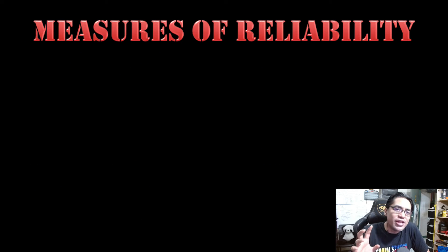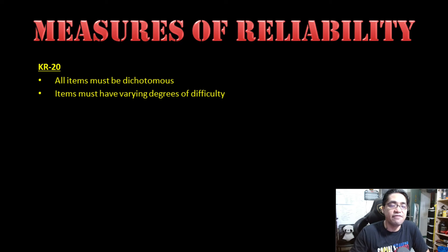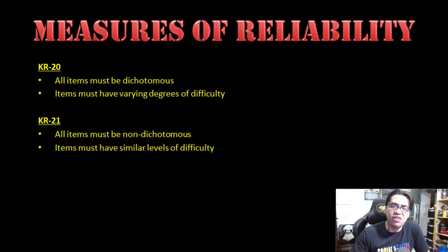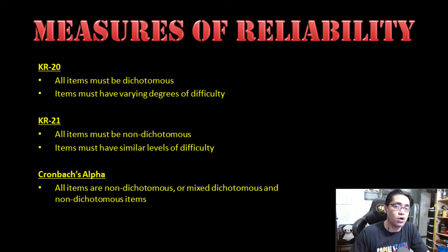To review: when should you use KR20, KR21, or Cronbach's alpha? If you have a test with purely dichotomous items and items have different levels of difficulty, use KR20. If you have purely dichotomous items and items have more or less the same level of difficulty, use KR21. If your test has non-dichotomous items — items with varying degrees of correctness — or a mix of dichotomous and non-dichotomous items, use Cronbach's alpha.